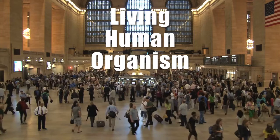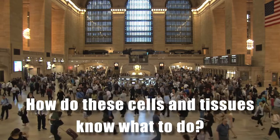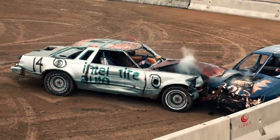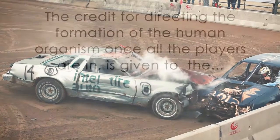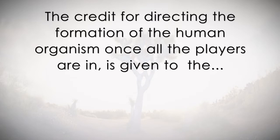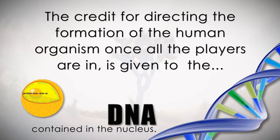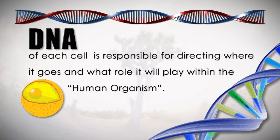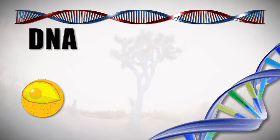The question here is: how do these cells and tissues know what to do? Well, if all goes well and no unexpected or deliberate internal or external cause comes into the picture, the credit for directing the formation of the human organism — once all the players are in — is given to the DNA, which is contained in the organelle known as the nucleus. The assigned DNA of each cell is responsible for directing where it goes and what role it will play within the human organism. The DNA, much like a movie director, is responsible for telling the actors what role they will play, where to go, and how to do it — according to the written script contained within itself.